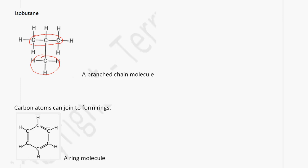Carbon can also join to form rings. These 6 carbon atoms join to form a ring molecule. In this case, this is benzene.